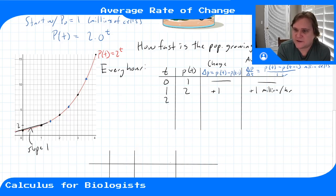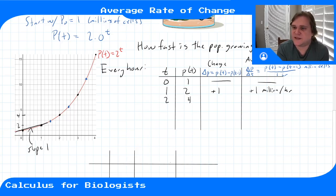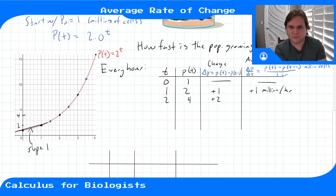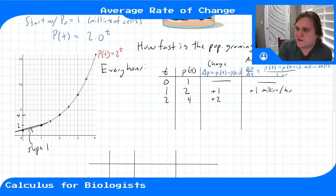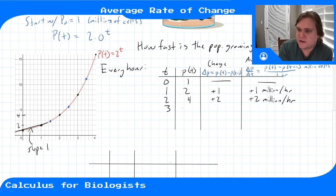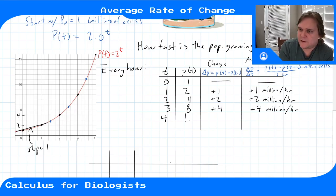At time two hours, our population is now four million. Since hour one, we've gone up by two million cells. So our new average rate of change between hours one and two is plus two million per hour. At time three, it's eight million — a change of plus four million, giving an average rate of plus four million per hour. And at time four, population is 16 million — a change of plus eight million, giving a rate of plus eight million per hour.